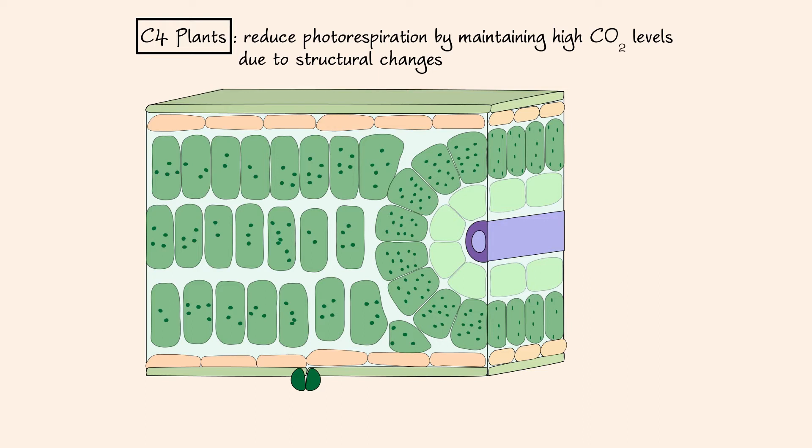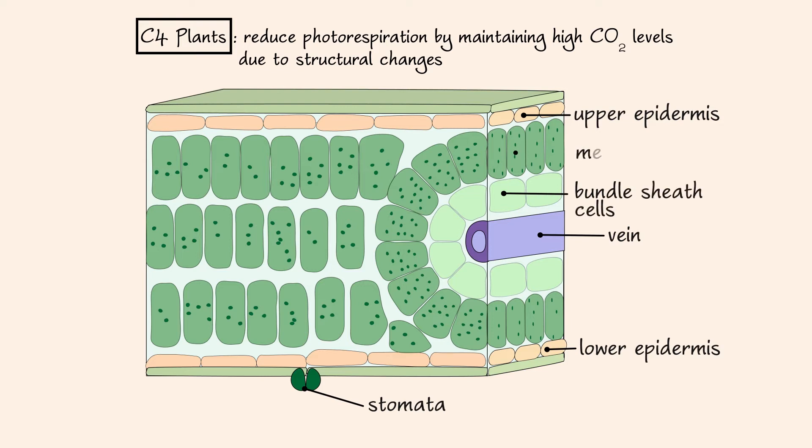Like the leaf of a C3 plant, the C4 leaf has epidermal layers on the top and bottom surfaces as well as stomata scattered on the bottom surface. The difference in structure arises in the mesophyll layer. Notice the vein is wrapped around by bundle sheath cells, which are in turn wrapped by mesophyll cells.